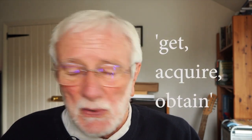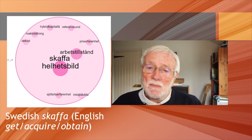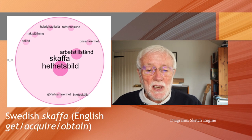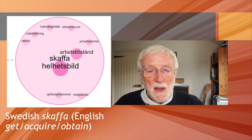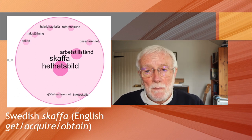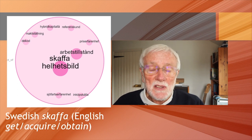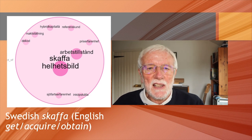Let's take for example the English notion of the verb 'to get,' 'to acquire,' or 'to obtain.' We can look at this in Swedish. If we look at the Swedish data set for the verb 'skaffa,' which more or less carries the same semantic notion, we see that its most common collocate — expressed here in the biggest font — is 'helhetsbild,' which means 'an overall picture.' We also see 'arbetstillstånd,' which means 'work permit,' and then various other collocations of a less frequent nature.